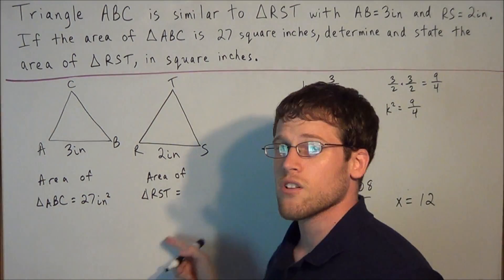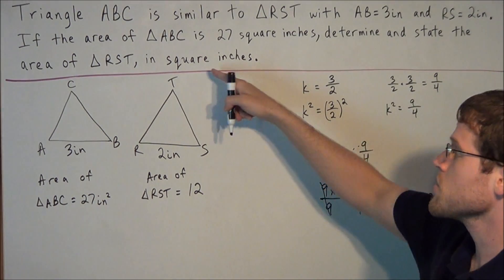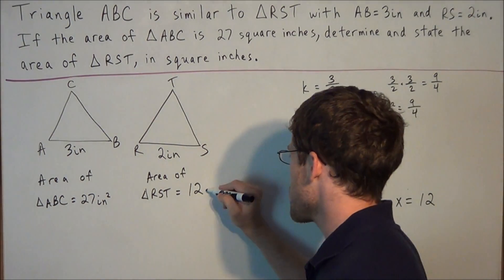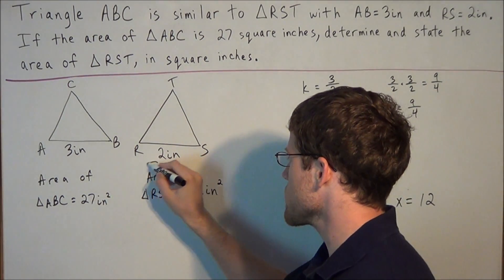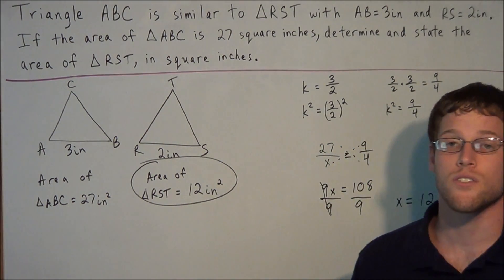So we have the area of triangle RST is equal to 12. But remember, the answer needs to be in square inches. This is an annoying way to lose a point. So make sure that you write square inches or inches to the second power. And we have our final answer. The area of triangle RST is 12 square inches.